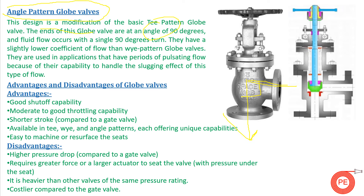Angle pattern globe valves have a slightly lower coefficient of flow than Y-pattern valves and produce the least pressure drop of the three types. They are extensively used in applications having high periods of pulsating flow because of their capability to handle the slugging effect of this type of flow. If the flow has pulsating effects, this type of valve is generally preferred.